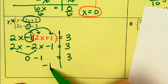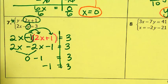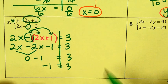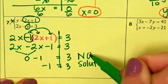So I end up with my variables disappearing. My two numbers that are left are not equal to each other. That's no solution.